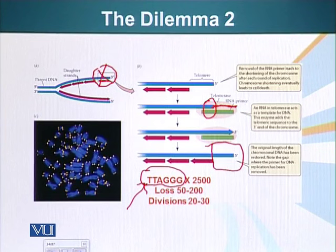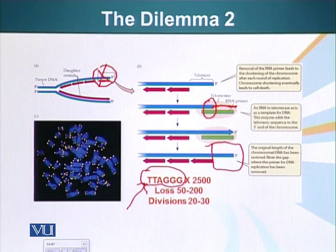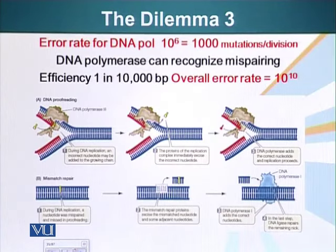Cancer cells have this ability. Certain other cells in our body that have to continuously divide also have this enzyme telomerase and have the ability to divide many many times. Other cells which do not have this ability will ultimately have their chromosomal DNA become so short that they will not be able to sustain themselves, and they will become either senescent or they will die.